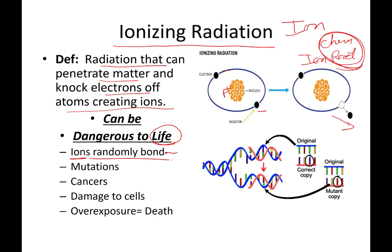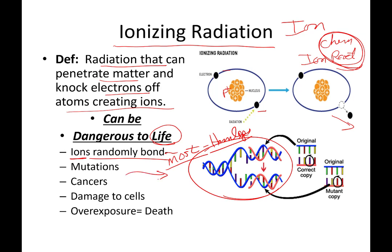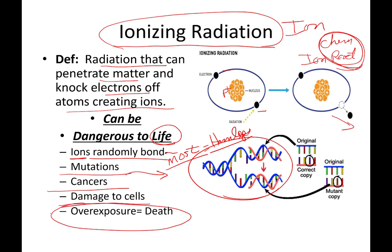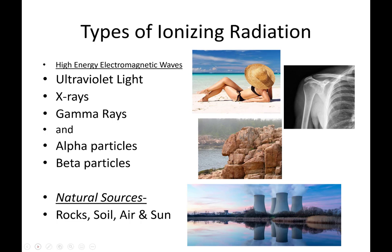It can be dangerous because the ion is going to randomly bond. Most of the time this will cause no damage — it's sort of like getting a paper cut: you heal up and it's not a big deal. But if the ion bonds with a piece of DNA in a sperm or egg that might create one of your children, that can cause a mutation. Or if it's a piece of DNA causing one of your cells to reproduce, it could possibly cause a cancer. High dosages — very, very high dosages — of this ionizing radiation can be dangerous and harm people and any form of life. It's important to understand what it is and how to protect ourselves.